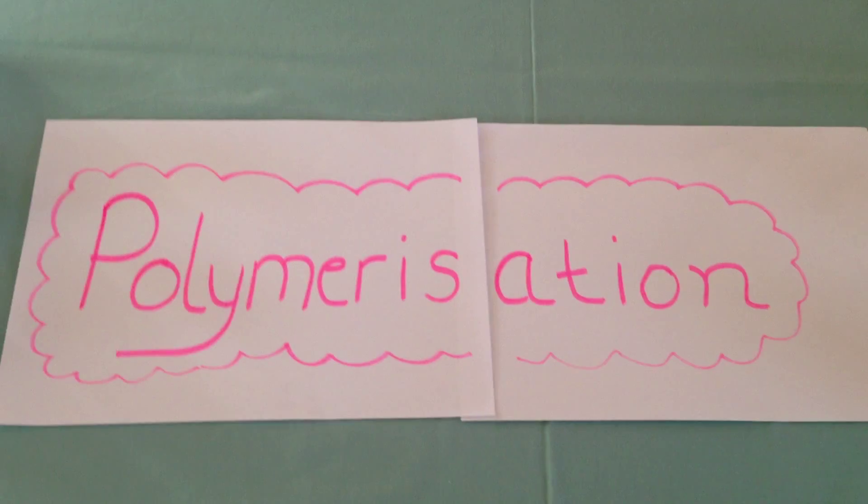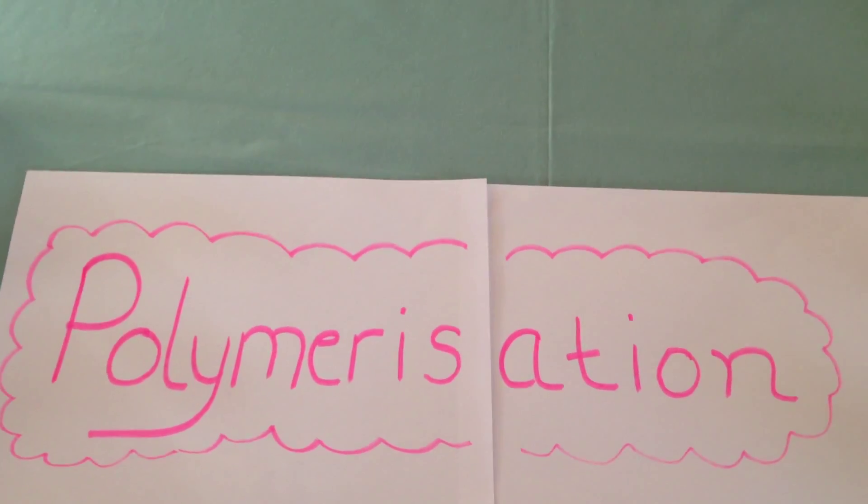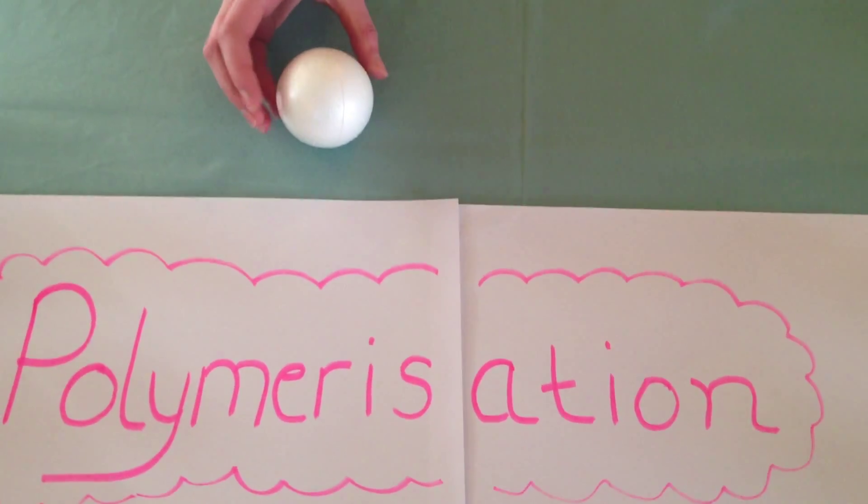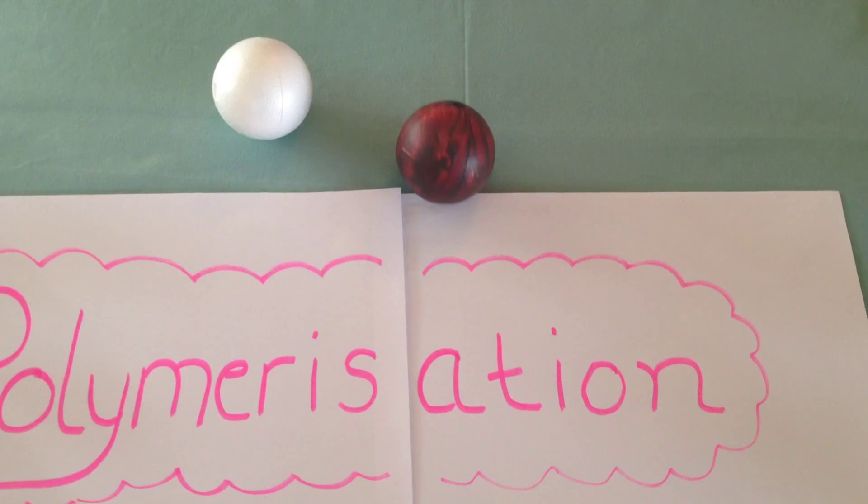In this example, ethene is going to be our alkene. The white balls will represent hydrogen atoms and the brown balls carbon atoms.